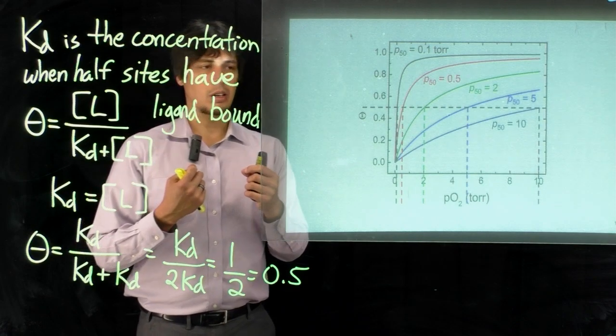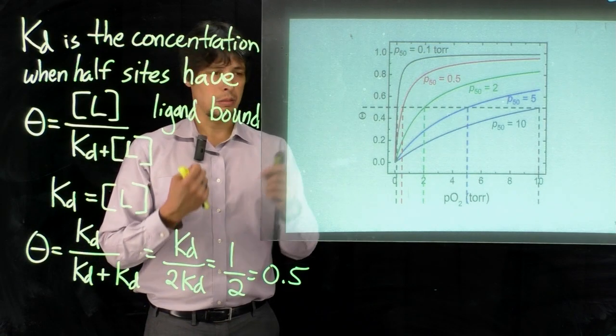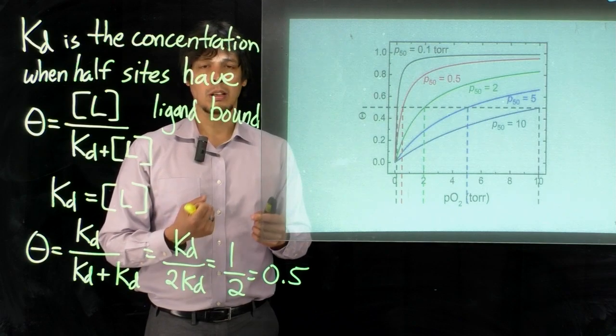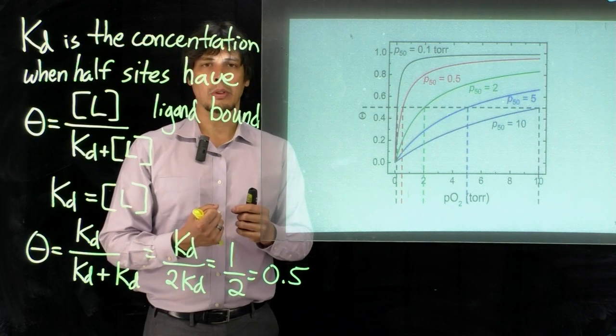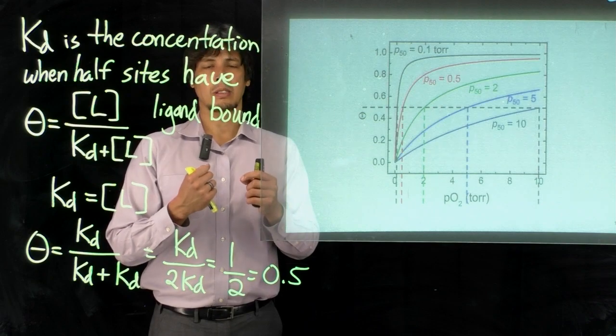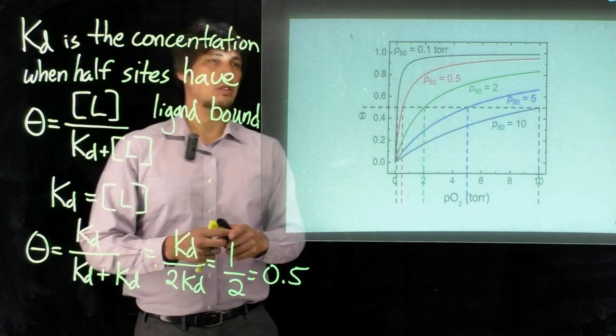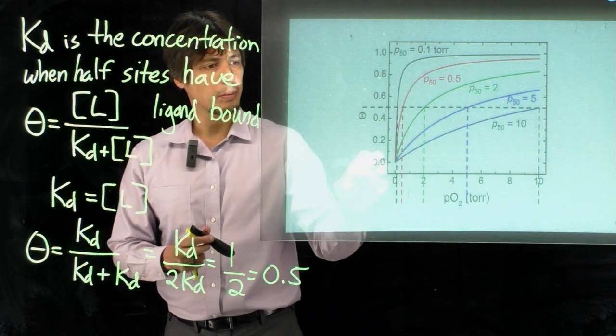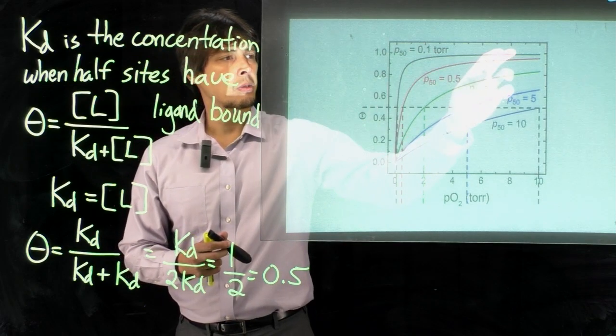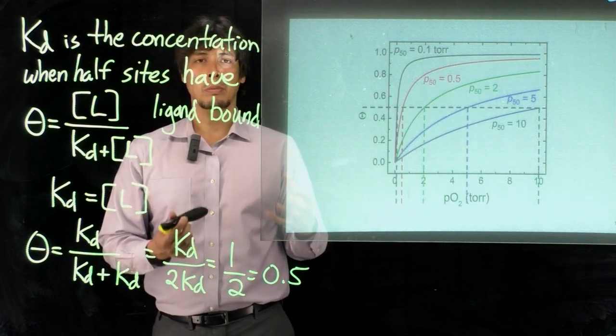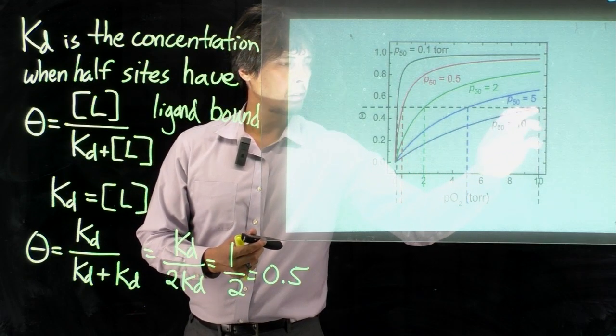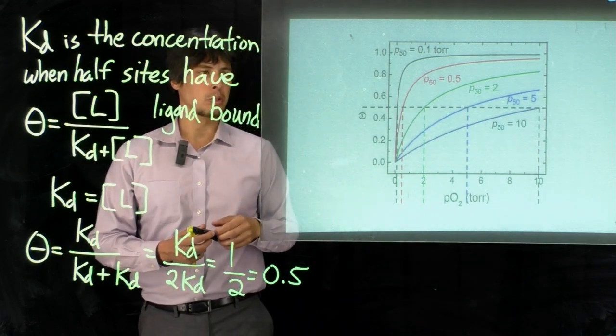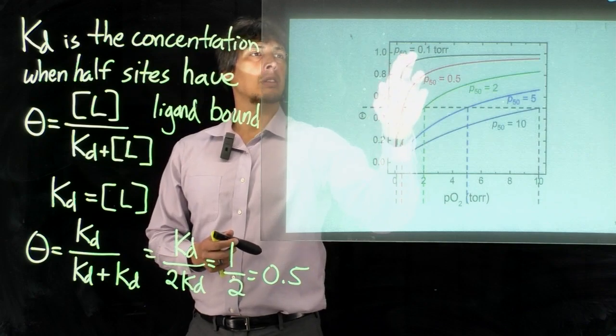And so as we said, KD and P50 in this case, the smaller the number is, the tighter the ligand binds. So the most tightly bound ligand is the one represented by the black trace, whereas the weakest bound ligand is the one denoted by the dark blue trace.